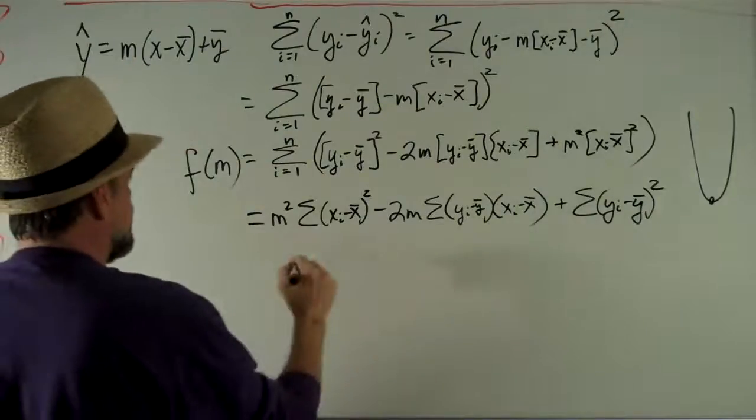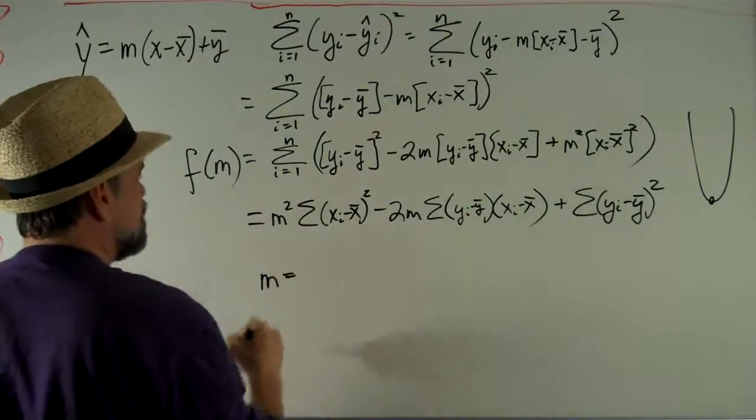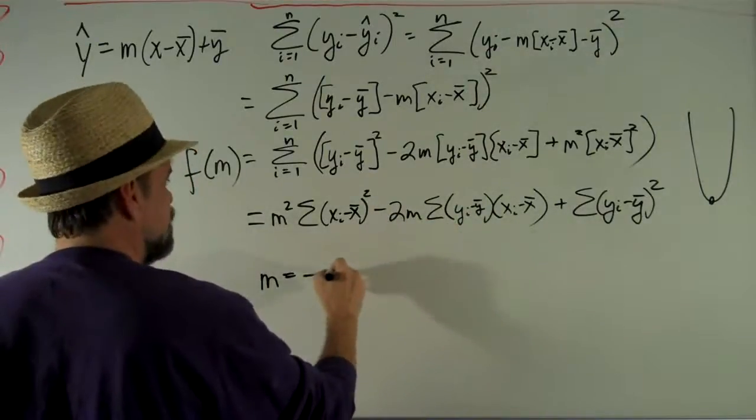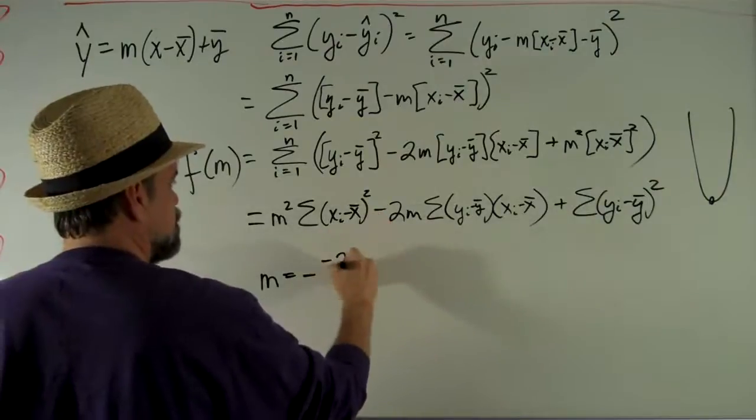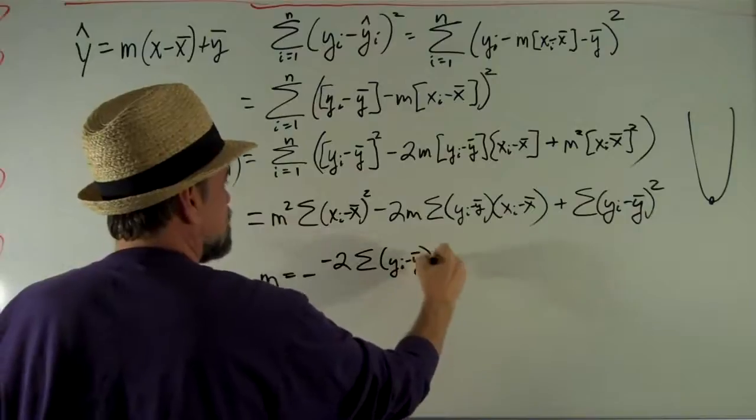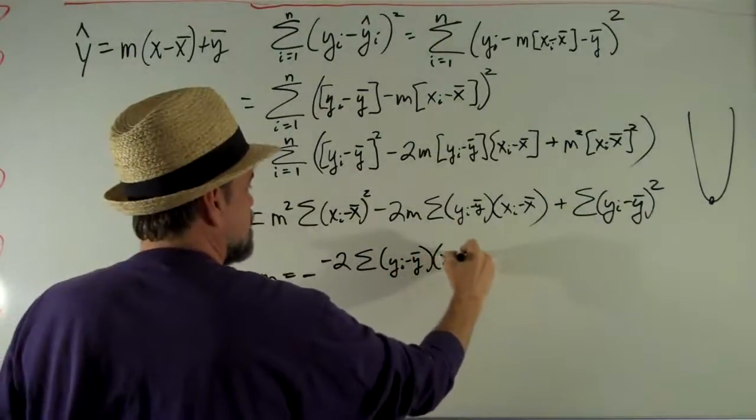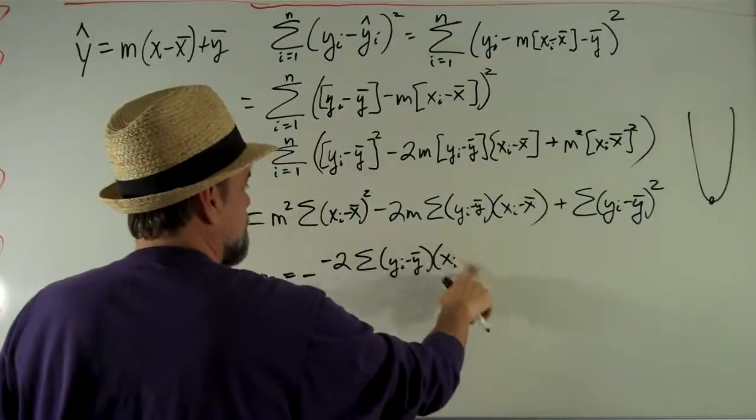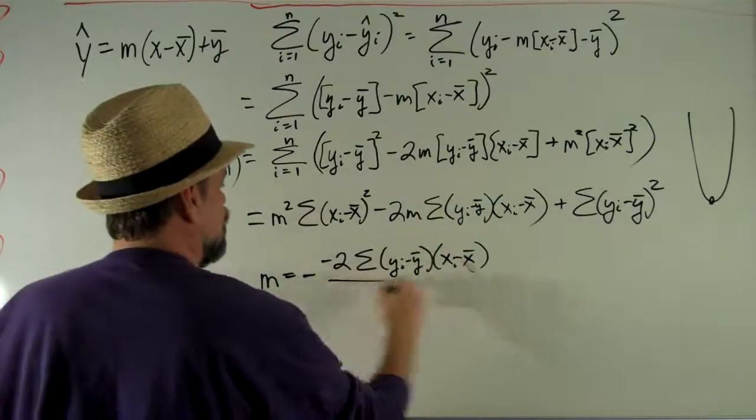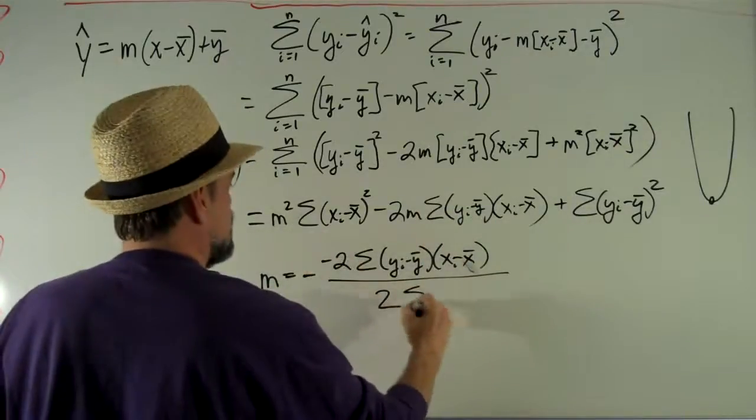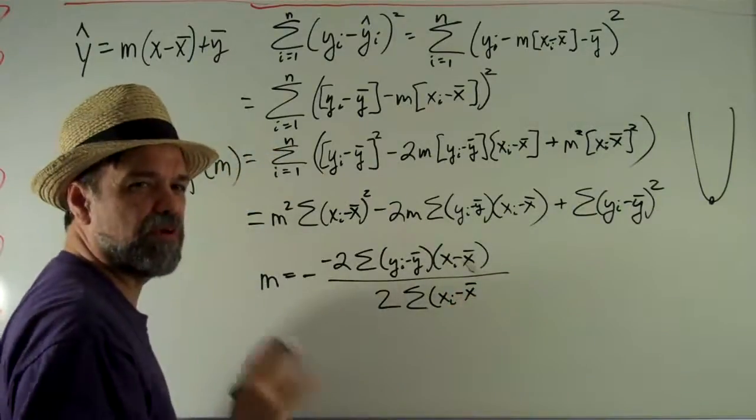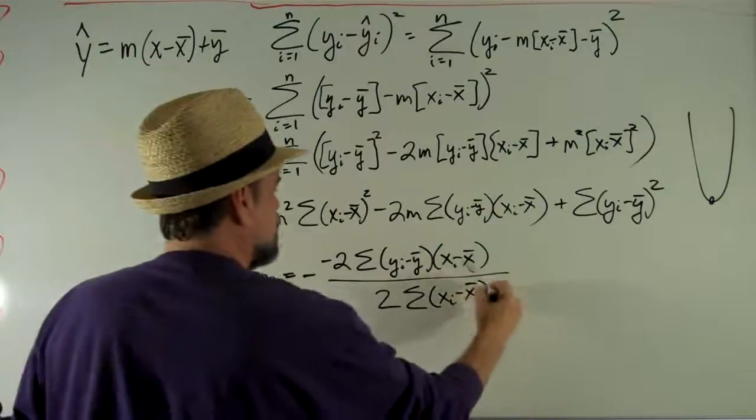At the minimum, m is going to be negative this thing. So negative negative 2 times the sum of yi minus y-bar times xi minus x-bar, over 2 times the first term, which is the sum of xi minus x-bar squared. Sometimes I'm saying hat when I mean bar, I apologize for that.